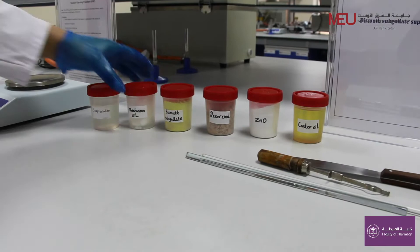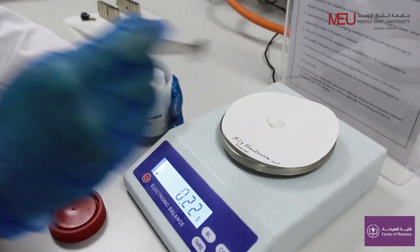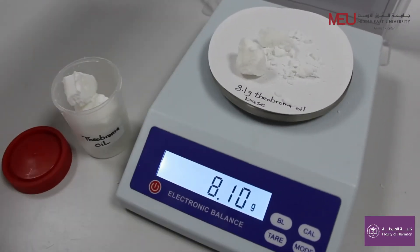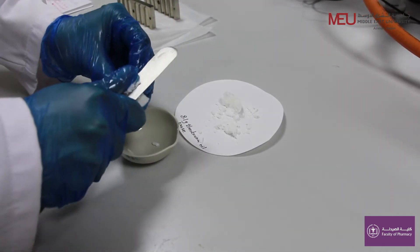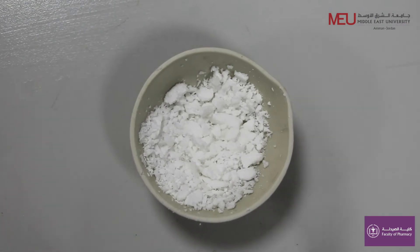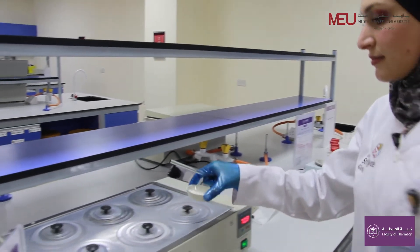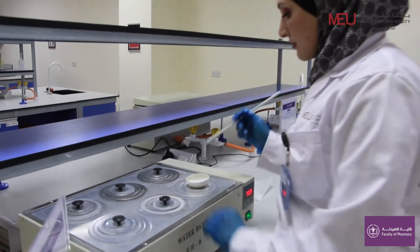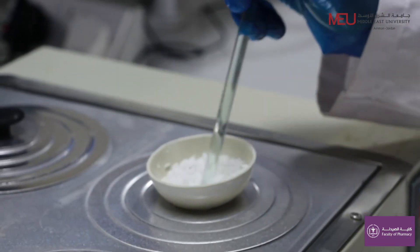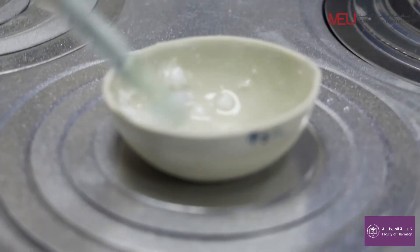Weigh 8.1 grams of theobroma oil which is used as a base. Cut them into small pieces with the spatula and put them in the basin. Warm gently using water bath. Allow two-thirds of the base to melt.